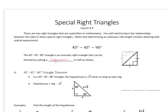This lesson is about special right triangles. There are two right triangles that are used often, and you're going to need to know the special relationships between the sides in these special right triangles. There is the 45-45-90, and there's also the 30-60-90 triangle. That's in reference to the angles.